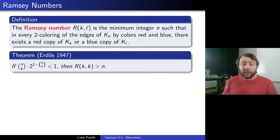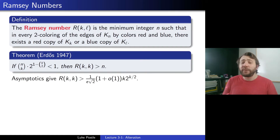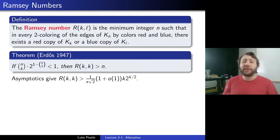There we concluded that R(K,K) was at least 2 to the K over 2. A better asymptotic analysis actually does a bit better — it shows you get at least 1 over E root 2 times (1 plus little-o(1)) of K times 2 to the K over 2. So you get an extra factor of K and the constant 1 over E root 2 using that inequality.